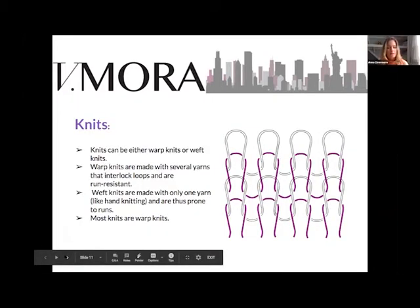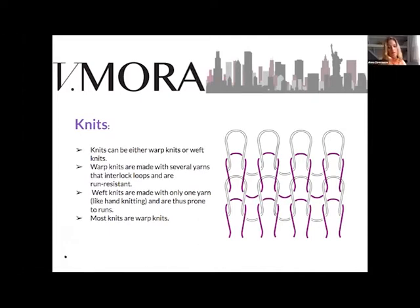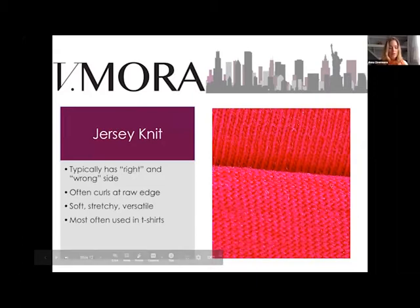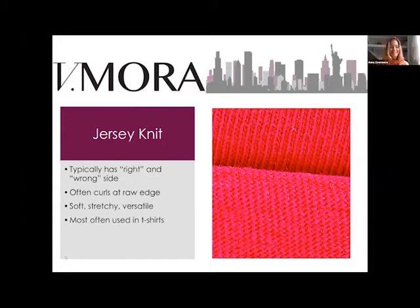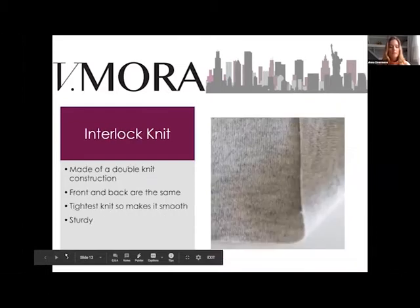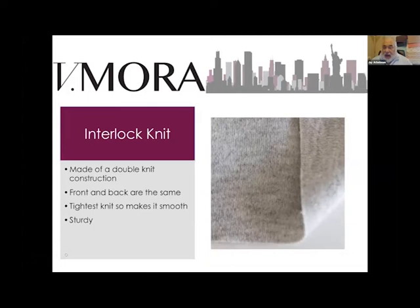Then we have knits — loops connected together. There are so many different kinds, and people use the word 'jersey knit' without always meaning jersey. Jersey is going to be very springy and very versatile — it makes great dresses and tops, and is specific mainly to women's wear and children's wear. Then there's interlock knit: t-shirts can be made from interlock, and it's going to be a little more dimensionally stable.